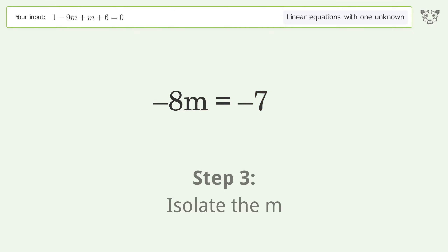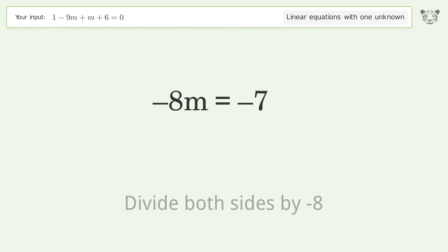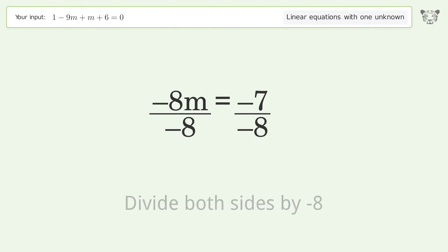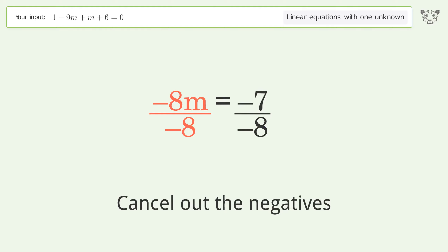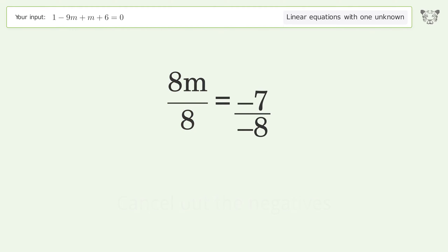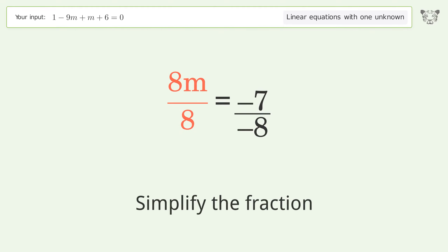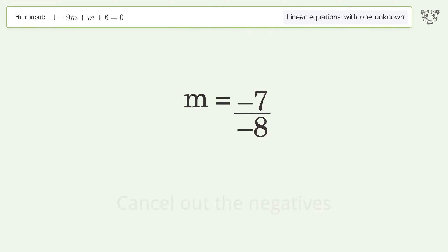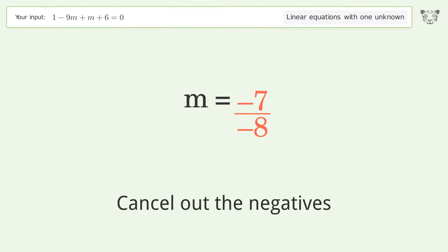Isolate the m: divide both sides by negative 8. Cancel out the negatives. Simplify the fraction. Cancel out the negatives.